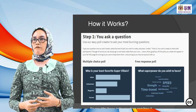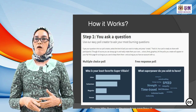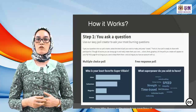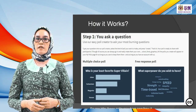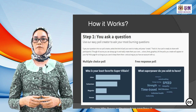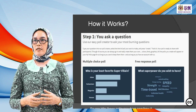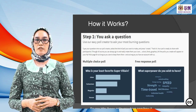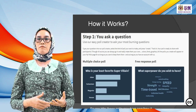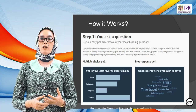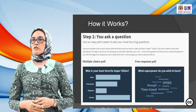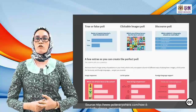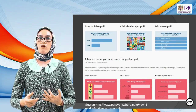How it works — Step 1: You ask a question. Use the Easy Poll Creator to type your question, select the kind of poll you want to make, and press Create. Your poll is ready to share with participants. You can customize with your own colors, fonts, and graphics. Poll Everywhere can be used for multiple choice polls, free response polls, or true or false polling.